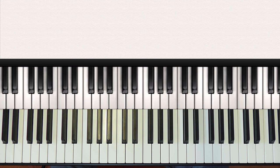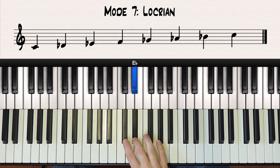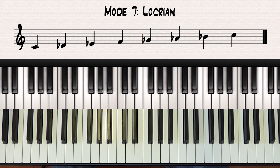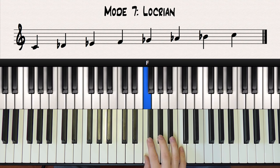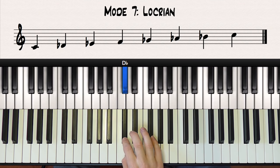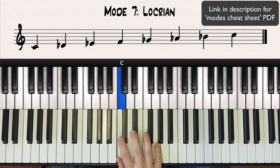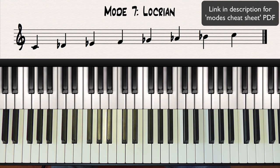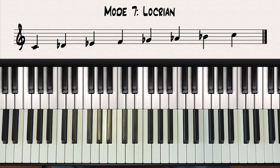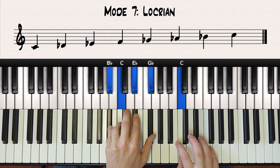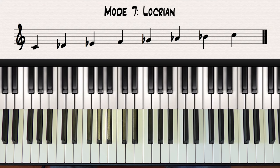Moving on to the final mode we have the Locrian mode. This is the seventh mode of the major scale and it has a flatted second, third, fifth, sixth and seventh. Or you can think of it as a D flat major scale beginning and ending on a C. Now this mode is not very common in popular music but it is used a lot in jazz, for example over a minor seven flat five chord. But I will go into more depth with this mode in another lesson.